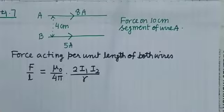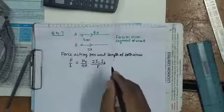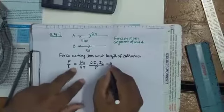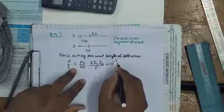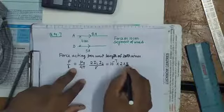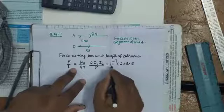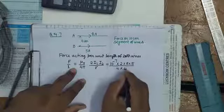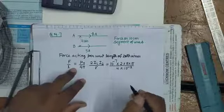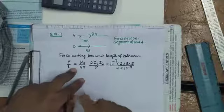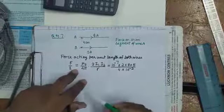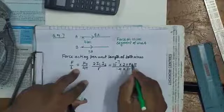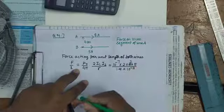Now you calculate this value of force. See here, substitute the values: 10 to the power minus 7 times 2 times 8 times 5 divided by r which is 4 centimeters, that is 4 times 10 to the power minus 2. When you simplify, 4 and 4 gives 2, then 8...